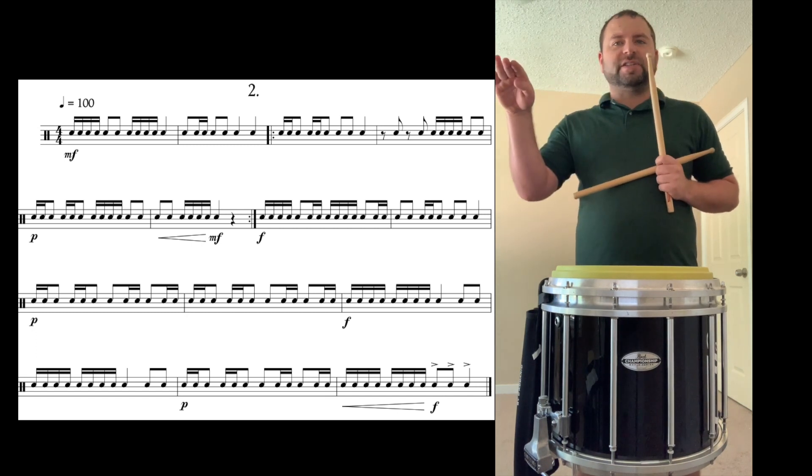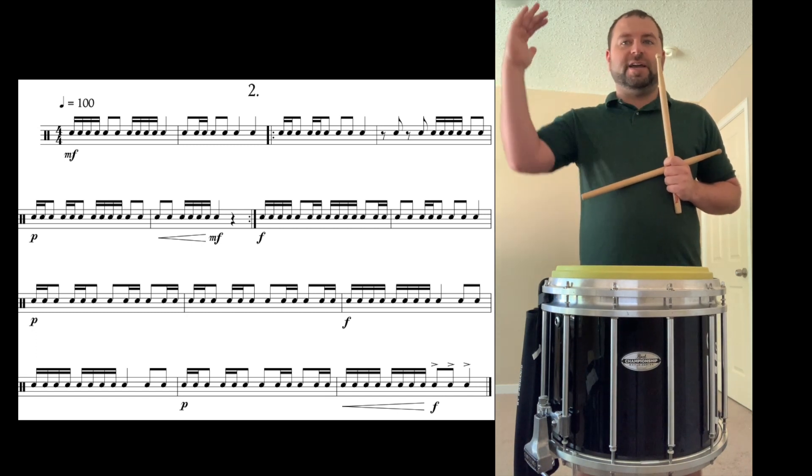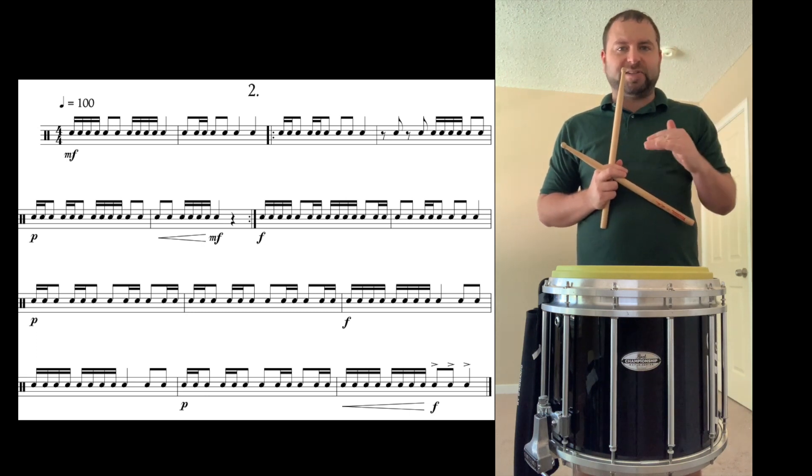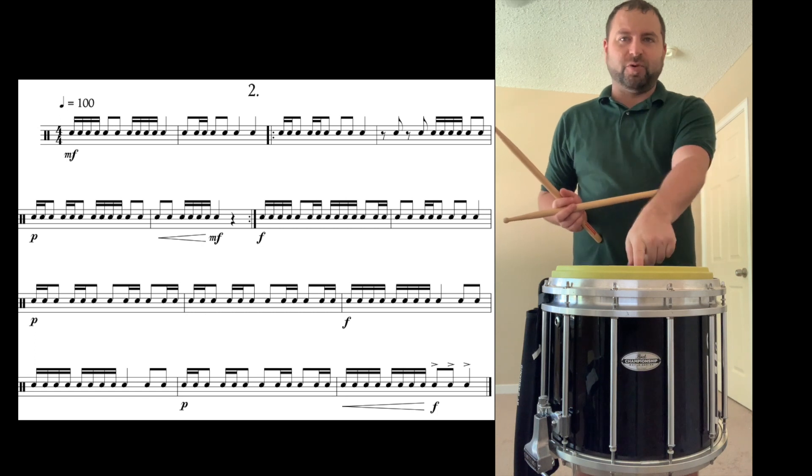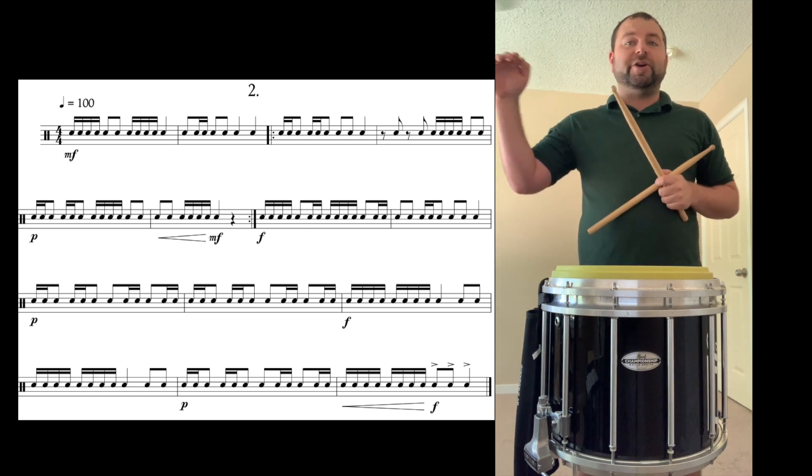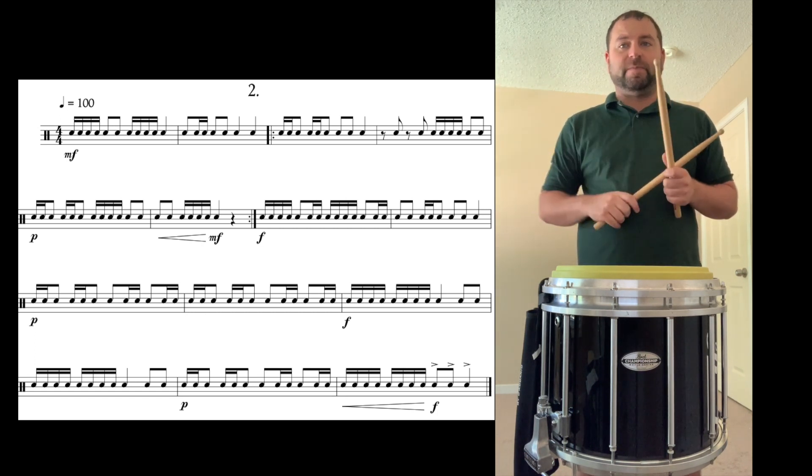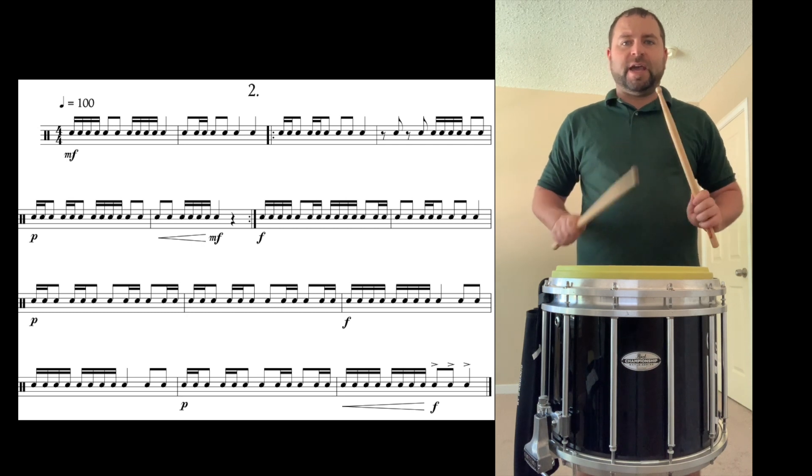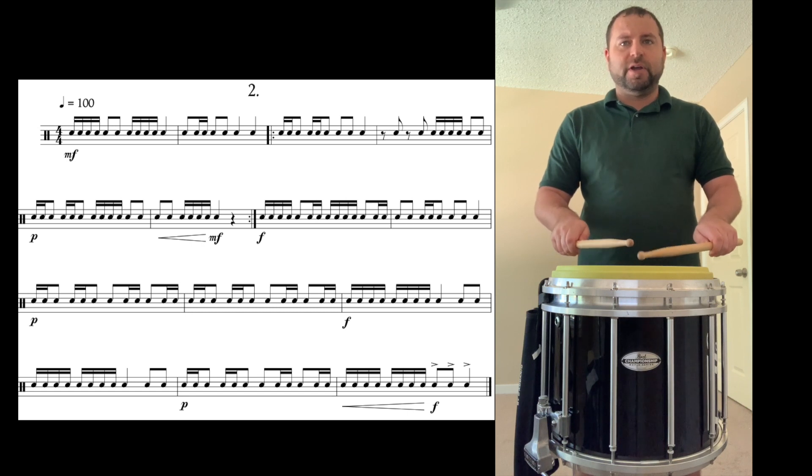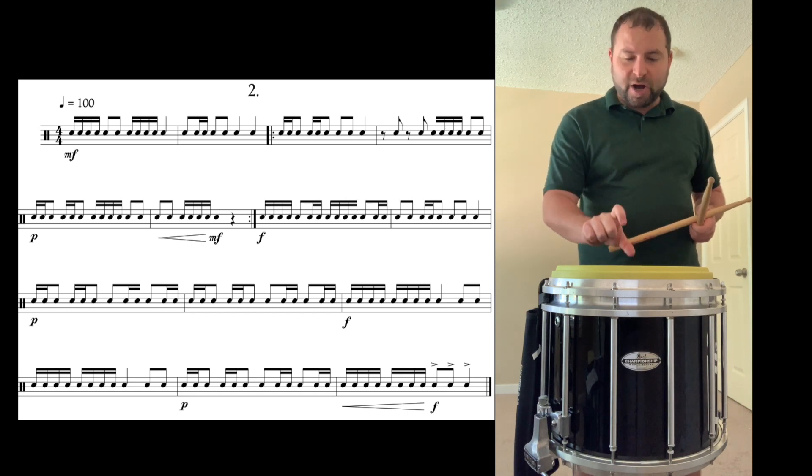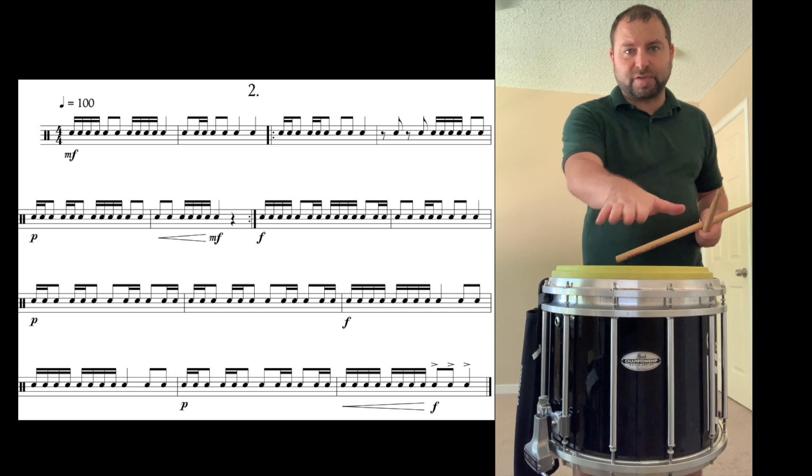As soon as you finish that second line at forte, he throws another quick little change at you, and he drops you back down to piano. So you got to go back down to playing our low height, and then push forward to the edge. So if I play the very last measure of the second line, 1e, and 2e, and 3e, and 4e. 1e, and 2e, and 3e, and a 4e, and a 1e. And it's again, soft, low, and to the edge, towards the front.